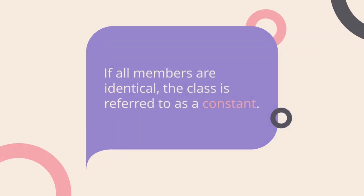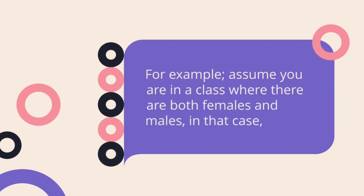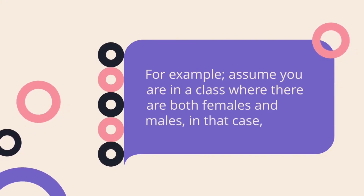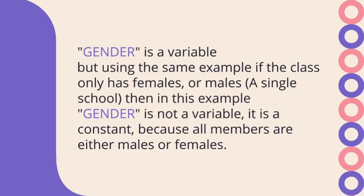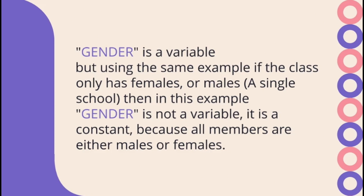For example, assume you are in a class where there are both males and females. In that case, gender is a variable, because the class has both females and males — it varies, it is measurable, and it is observable. But if the class only has females or only males, then gender is not going to be a variable. In that case, gender is going to be called a constant.